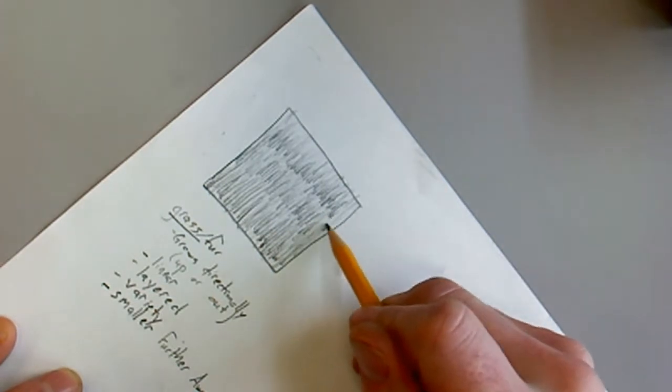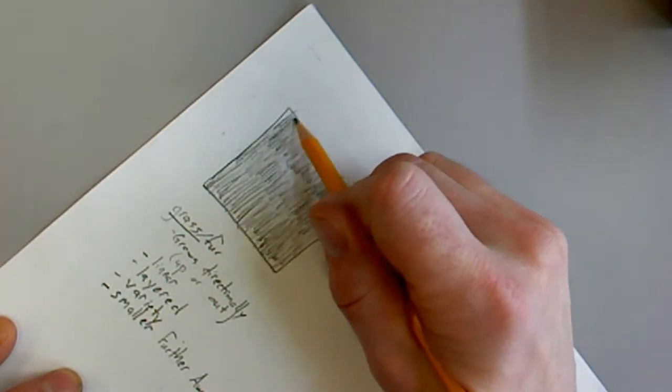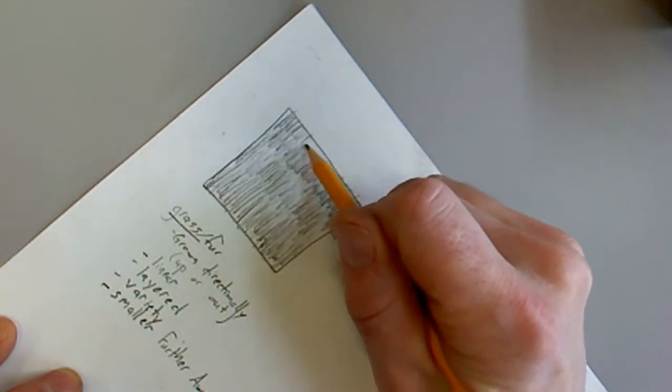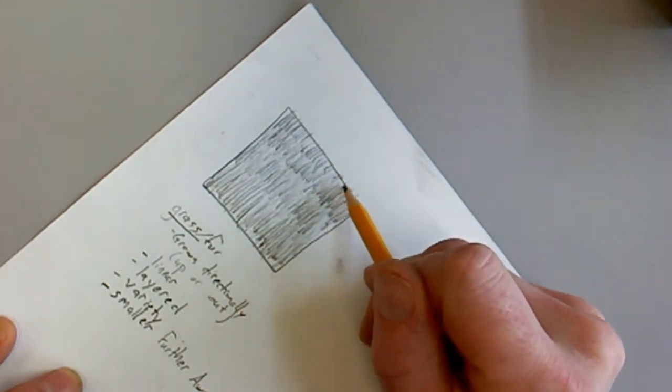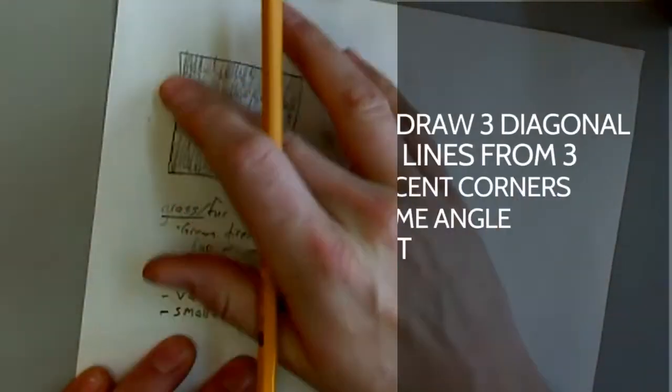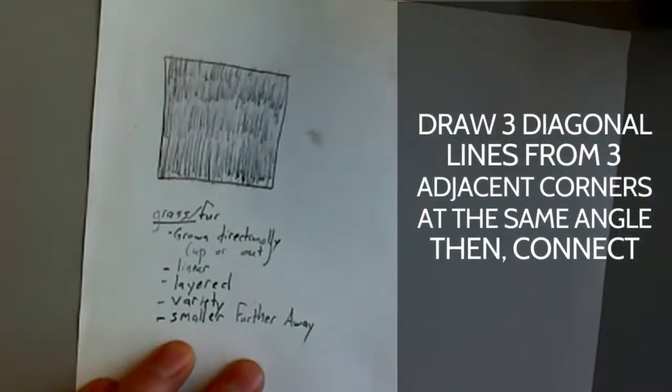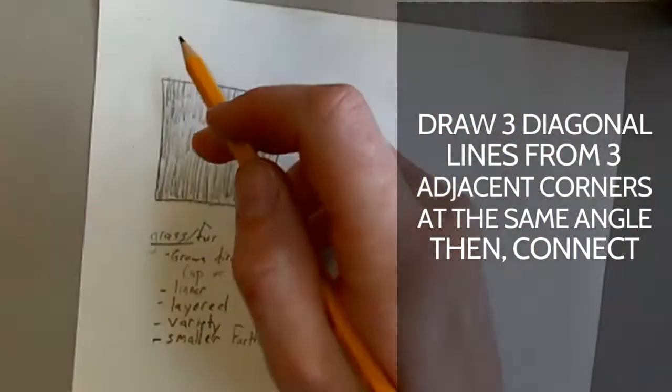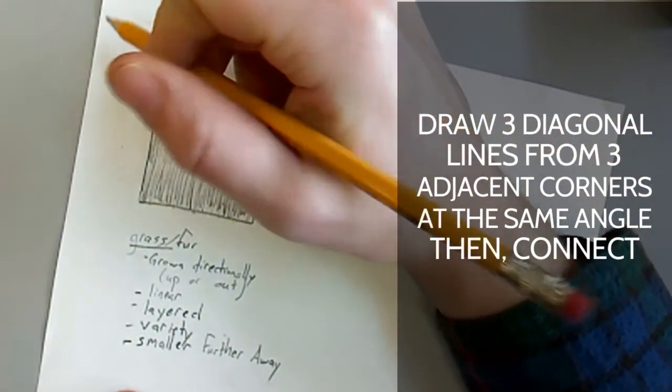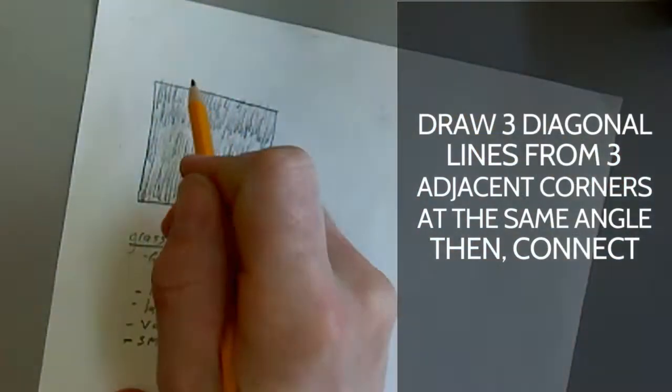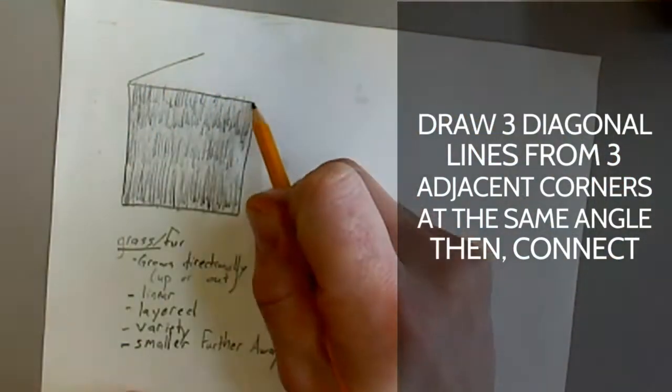Notice also that I'm layering so that my longest marks are low on the page or in that box and there's a layer above that that is somewhat shorter, a short layer above that, and a very short layer at the very top. I encourage you to take a moment to blend just gently running your finger with the texture or the direction of your marks.